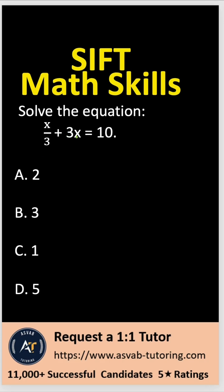In order to solve this problem, what do you have to do? You have to combine the like terms or simplify it. So you can see here x over 3 plus 3x — you have to add them up. In order to add any kind of fraction, you have to find the common denominator.